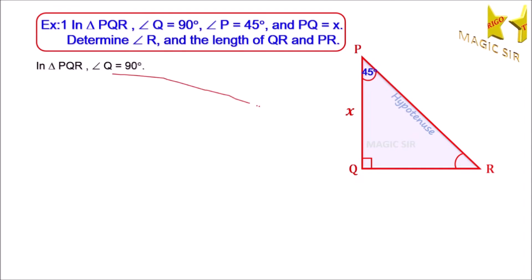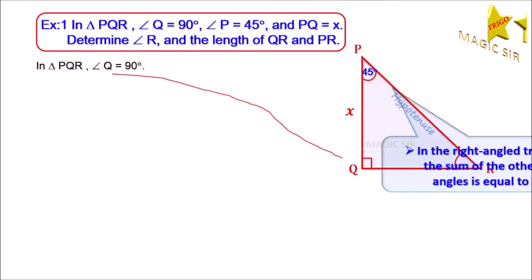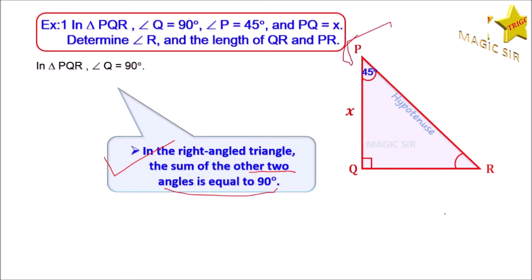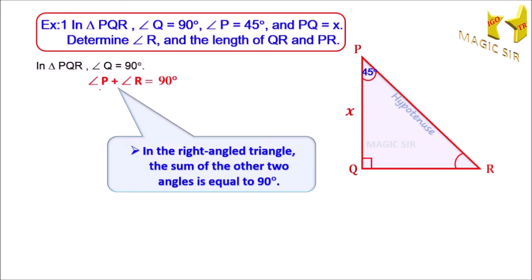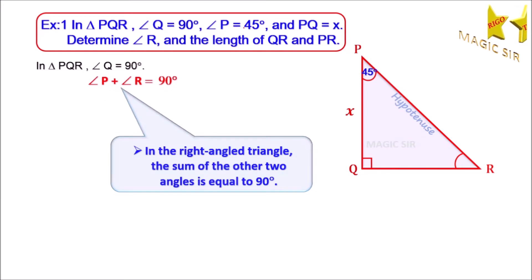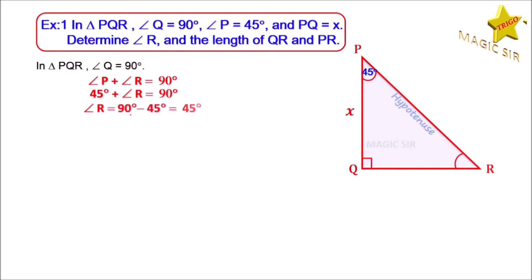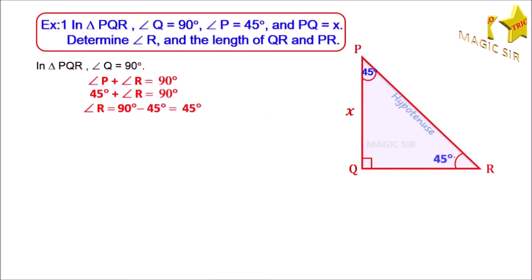In triangle PQR, angle Q is equal to 90 degrees, and we know that in a right-angle triangle, the sum of the other two angles is equal to 90 degrees. The other two angles means angle P and angle R. So we can write angle P plus angle R is equal to 90 degrees. Since angle P is equal to 45 degrees, therefore 45 degrees plus angle R equals 90 degrees, so angle R is equal to 45 degrees. We put R equal to 45 degrees in the figure.